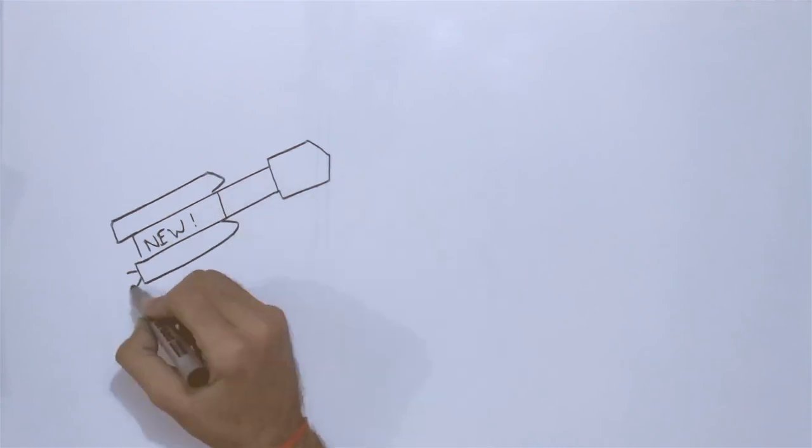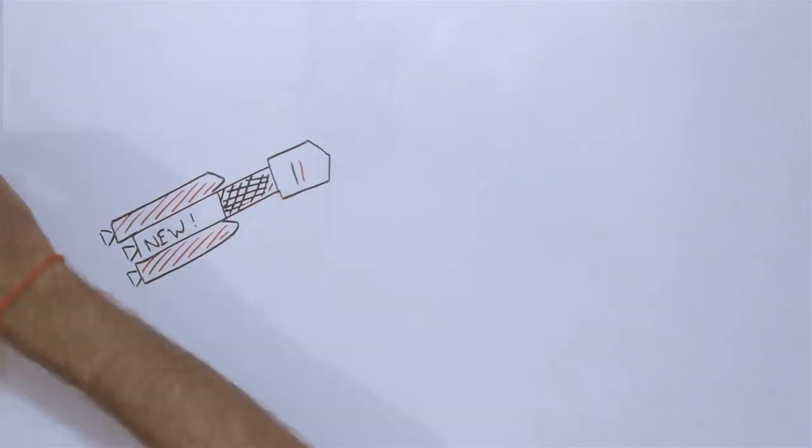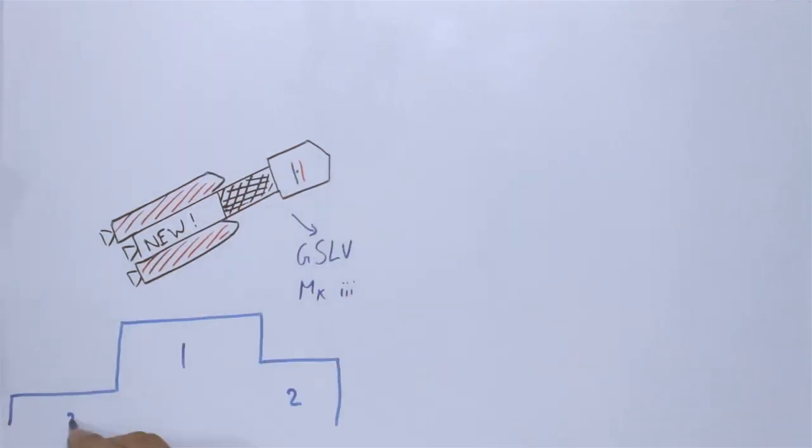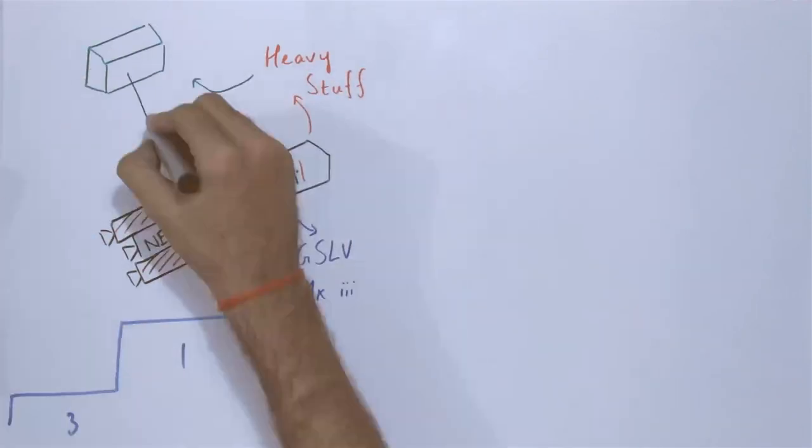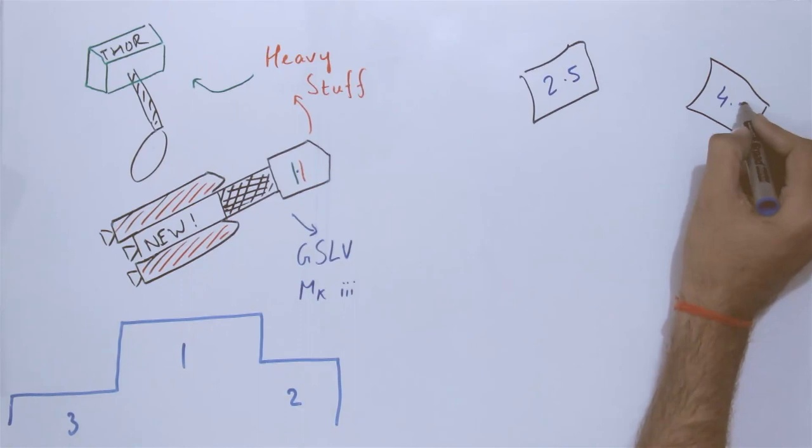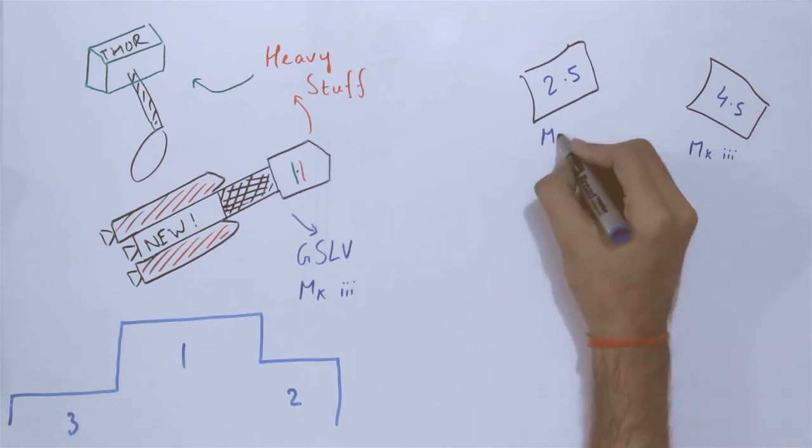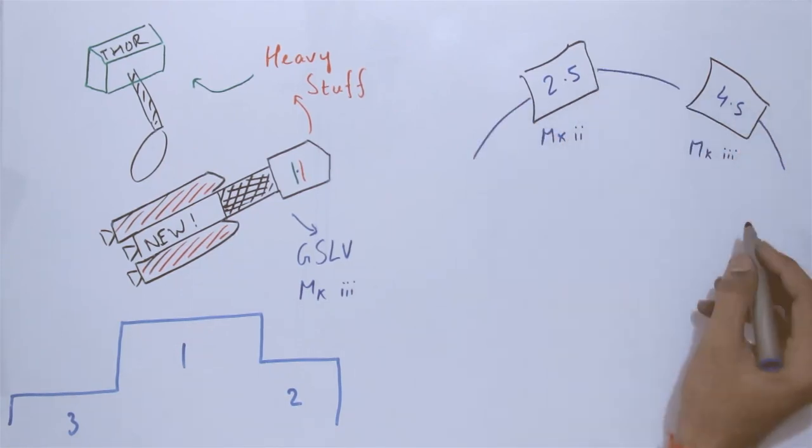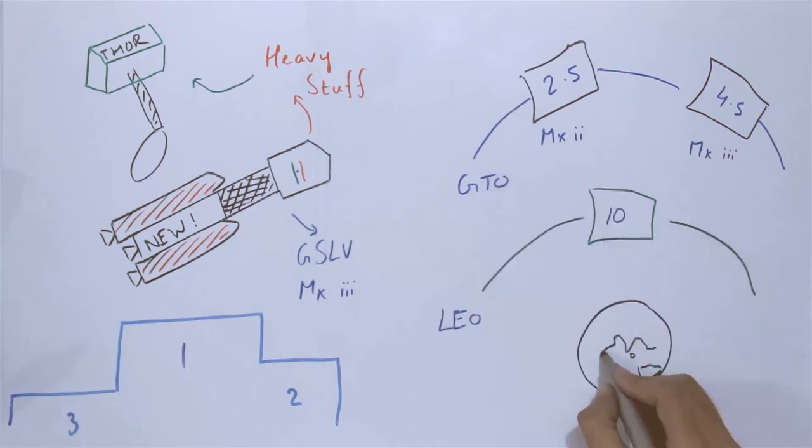The new version of the Geosynchronous Satellite Launch Vehicle, also known as GSLV Mark III, is India's first rocket built to fly the heaviest of stuff into space. While the Mark I and II rockets can place up to 2.5 tons into the geostationary transfer orbit, the Mark III can place up to 4.5 tons in geostationary transfer orbit and 10 tons in the low-earth orbit.